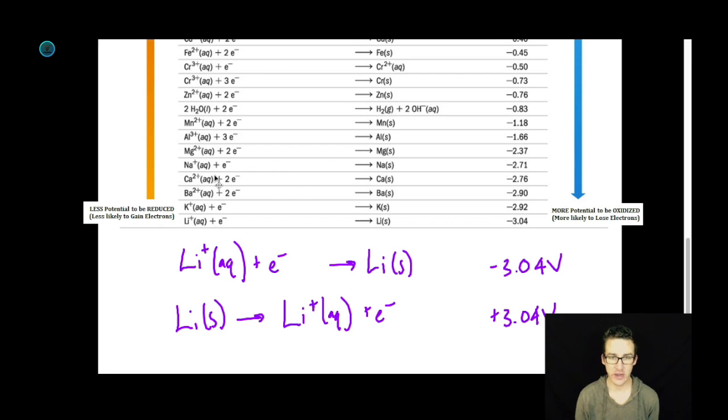So as you're working with the reduction potential list, keep in mind that if you reverse that half reaction to get the oxidation half reaction, you're also going to reverse the sign of your reduction potential to get your oxidation potential.